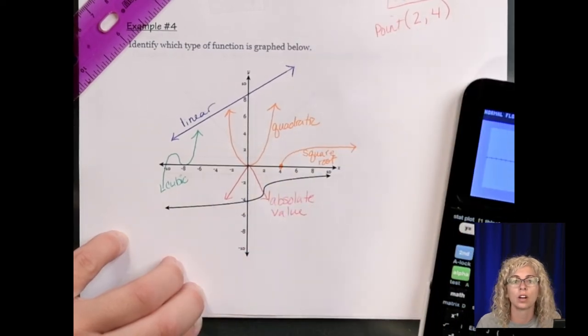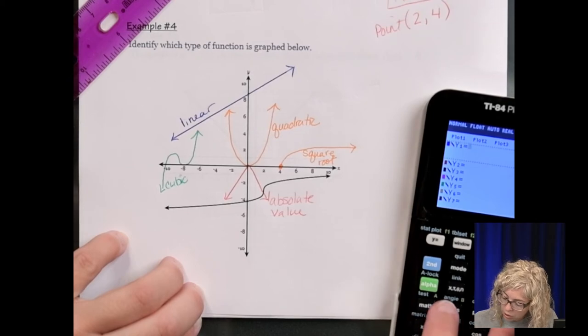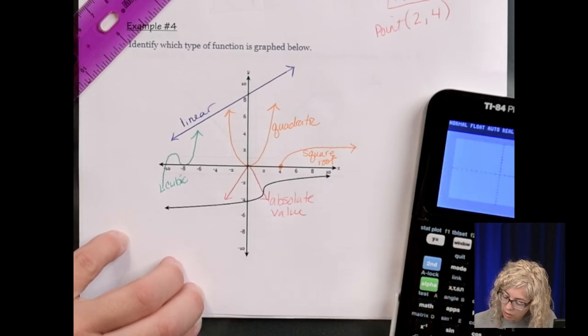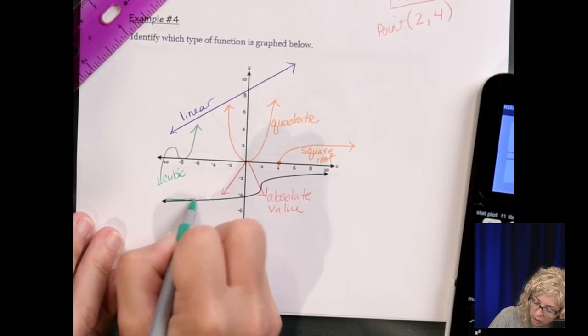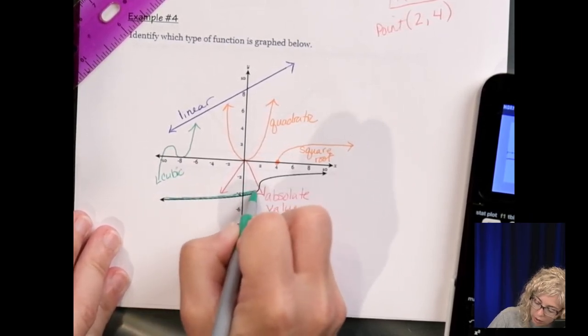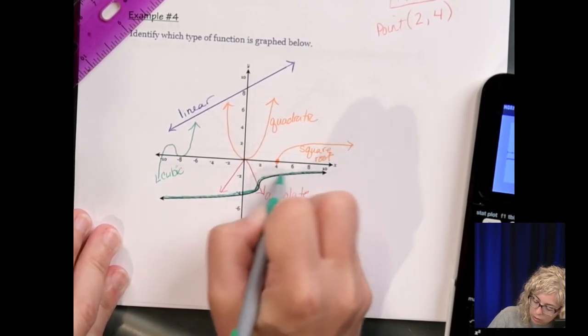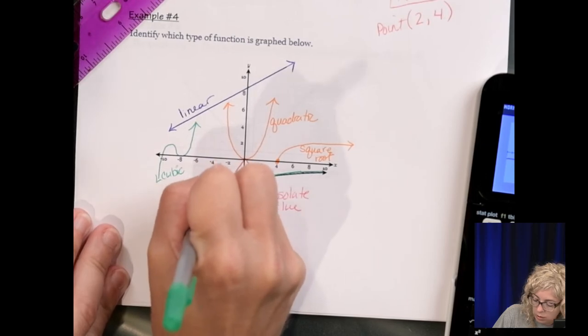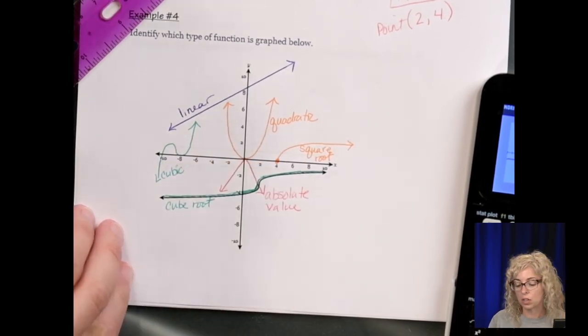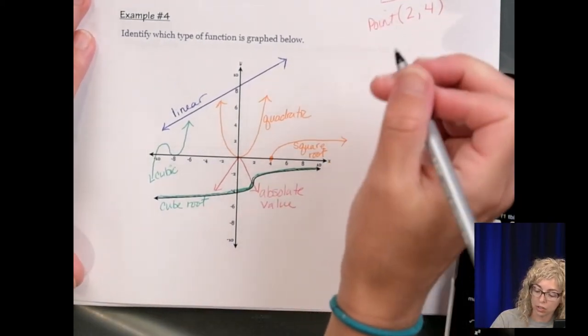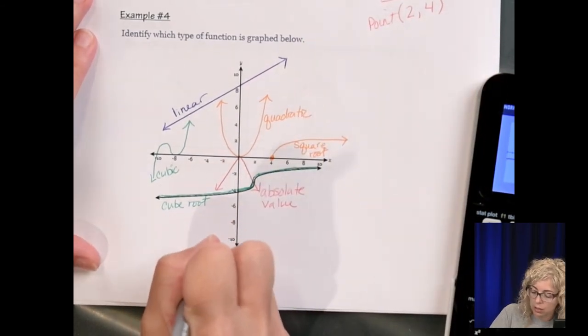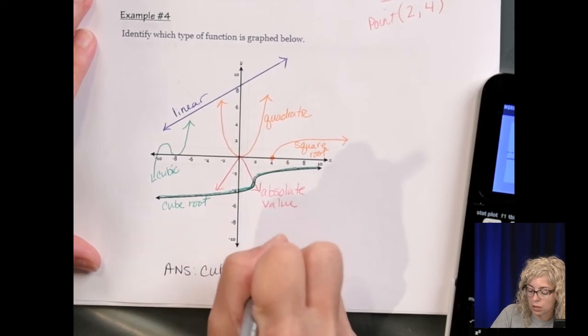And then the inverse of cubing is cube root. So go back to y equals clear. And cube root is under math. But number 4, cube root of x. Let's hit graph. And we can see it looks like that, which is what we see. So I'm just going to go over this in green. Or highlight. As this is our cube root function. And the only other one that we don't have on this picture is the piecewise function, which would just be pieces of any one of these functions. So our answer, the function that was graphed was the cube root function.